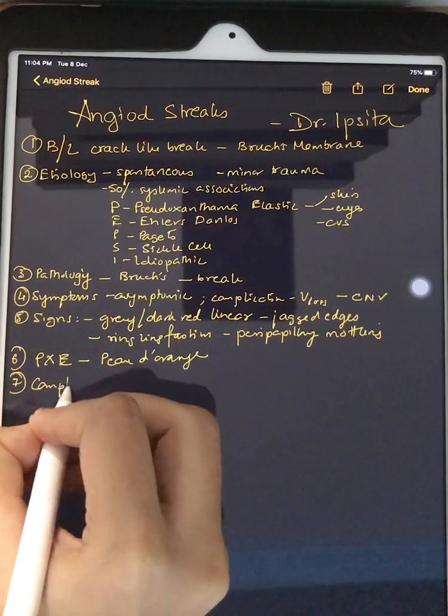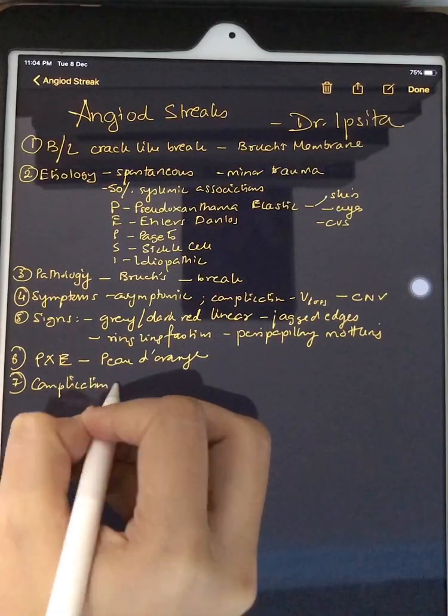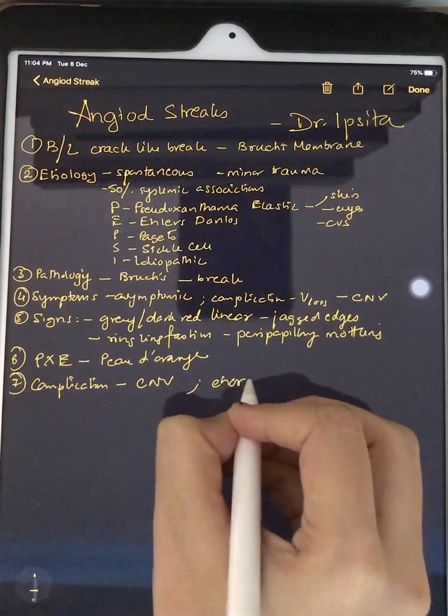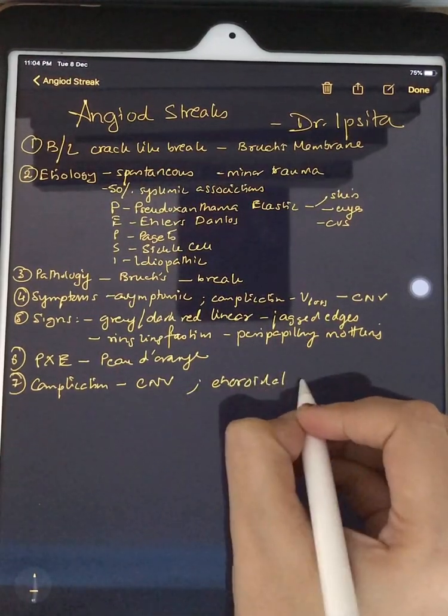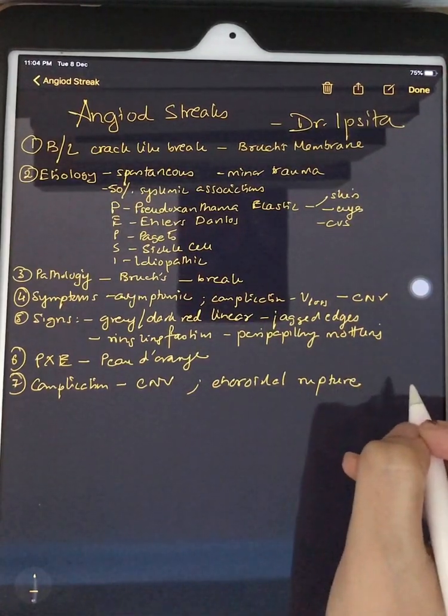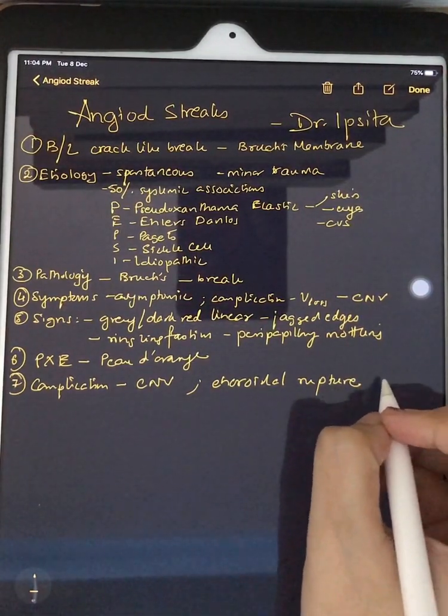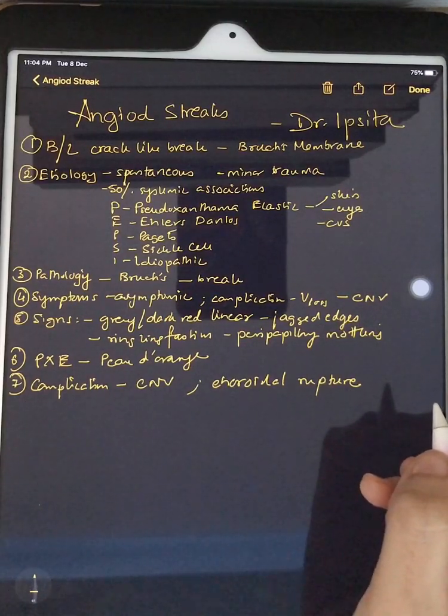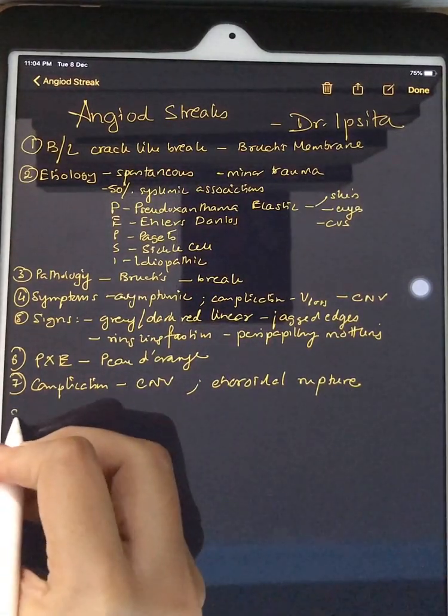What are the complications of this disease? The complications are choroidal neovascularization. Then we have choroidal rupture, which can happen with minor traumas, and that is why we avoid scleral indentation in such patients because we ourselves with scleral indentation can contribute to an additional break.